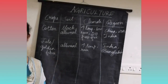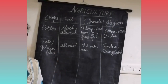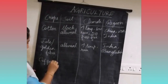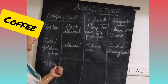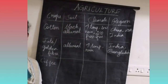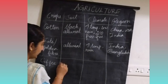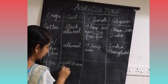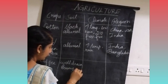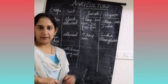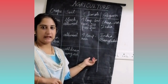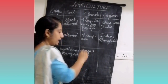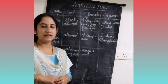Now we are going to see about beverage crops. The first one is coffee. For soil, coffee requires well-drained, loamy soil. Coming to the climate, they require warm and wet climate, and it is mostly suitable in hilly areas or hilly slopes.